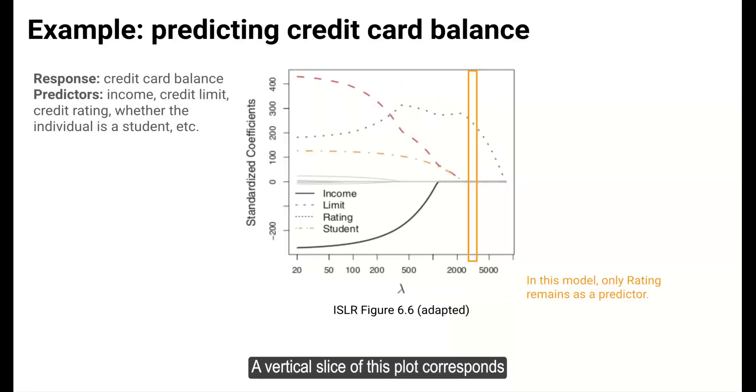A vertical slice of this plot corresponds to one particular model. In the slice highlighted here, all coefficients are zero except the one for the credit rating variable. This indicates that the model chosen for this value of lambda has only rating as a predictor.